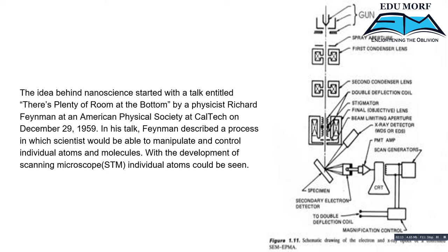The talk was by physicist Richard Feynman at an American Physical Society meeting at Caltech on December 29th, 1959. In his talk, Feynman described the process by which scientists would be able to manipulate and control individual atoms and molecules. With the development of the scanning tunneling microscope (STM), individual atoms could also be seen — a major breakthrough. A diagram of the STM is shown on the right-hand side.